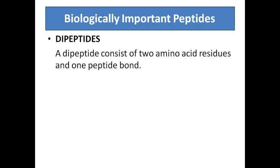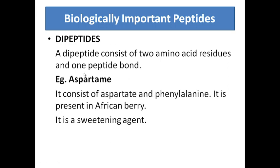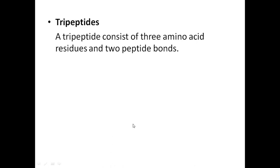We will now look at some biologically important peptides. Dipeptides: when two amino acids are linked together by one peptide bond, it is called a dipeptide. An example is aspartame — it consists of the amino acid aspartate linked with phenylalanine. These two amino acids linked together result in the formation of a dipeptide. It is present in the African berry and acts as a sweetening agent.